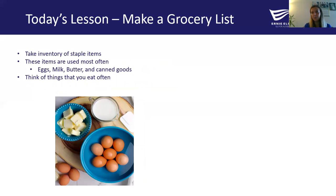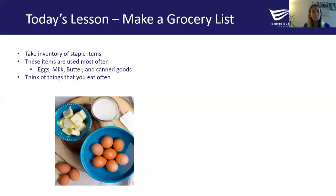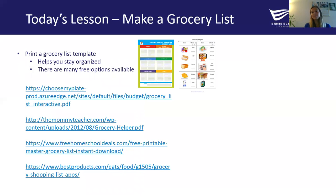You'll also want to take inventory of your staple items — these are the items you would be using most often in your recipes or things you eat a lot throughout the week, maybe your favorite snack or favorite food. Some staple items would be eggs, milk, butter, and canned goods. These ingredients are used a lot in a majority of recipes.